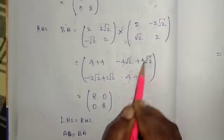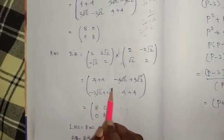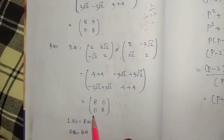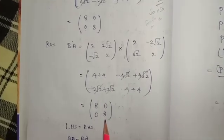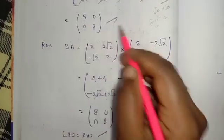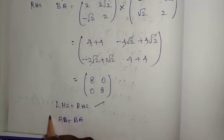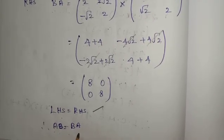Minus 4 root 2 plus 4 root 2, cancel. Minus 2 root 2 plus 2 root 2, cancel, 0. This is 0. 4 plus 4, 8. Then equal, LHS is equal to RHS. Therefore AB is equal to BA.